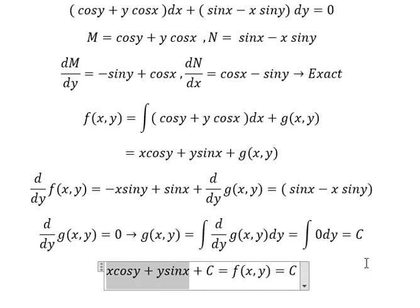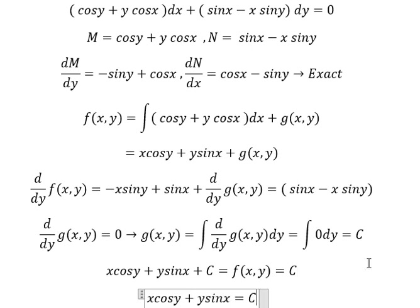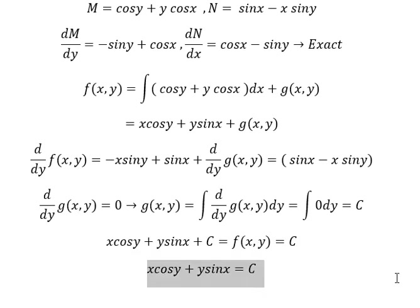And now we can simplify like this. And this is the final answer: x cos y plus y sin x equals C. This is the end, thank you for watching.